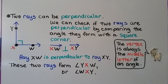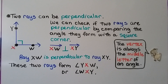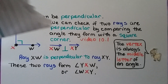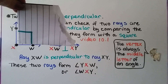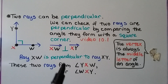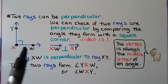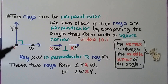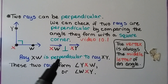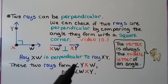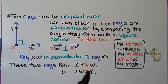Two rays can also be perpendicular. We have a ray starting at X and going up, and another ray starting at X and going to the right. We can check if two rays are perpendicular by comparing the angle they form with a square corner — we learned how to do that in video 10.1. We take a square corner, see if it fits and makes a square, and it does. We write: ray XW is perpendicular to ray XY. These two rays form angle YXW — or WXY, because we can go in either direction — as long as X is in the middle, since the vertex is always the middle letter.